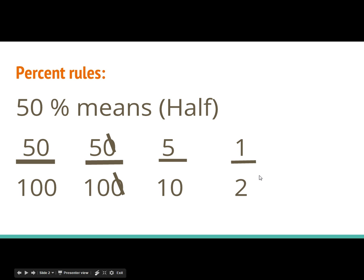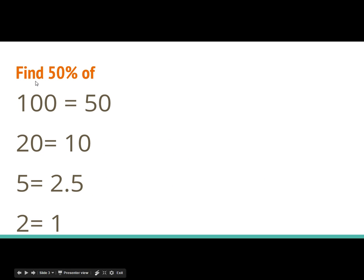So if I need to find 50% of a number, I just cut it in half. That makes life easy. 50% of 100, cut it in half, divide that by 2, 50. Half of 20, 10. 50% of 5, half, which is 2.5. 50% of 2, cut it in half, 1.